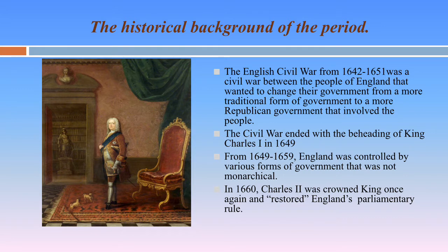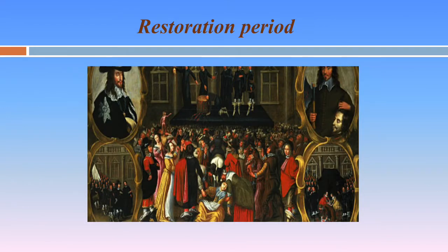Those who supported the King were called Royalists; those who supported the Commons were called the Puritans. In 1642, the King declared war on Parliament and the civil war began between the Royalists and the parliamentarians, lasting till 1649. The Parliamentary army headed by Oliver Cromwell consisted of representatives of the bourgeoisie, gentry, artisans, and other working people.